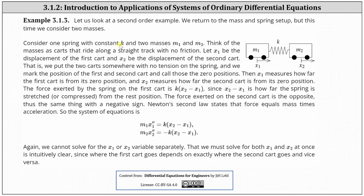Consider one spring with constant K and two masses M1 and M2. Think of the masses as carts that ride along a straight track with no friction. Let x1 be the displacement of the first cart and x2 be the displacement of the second cart.